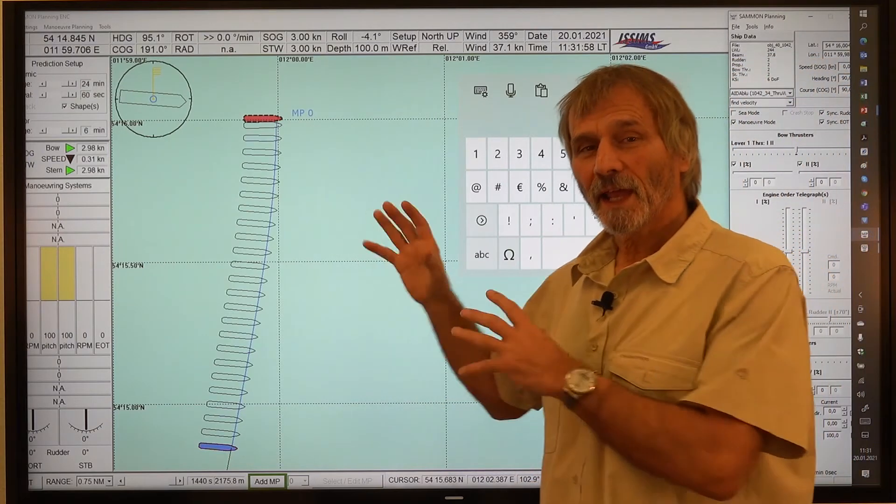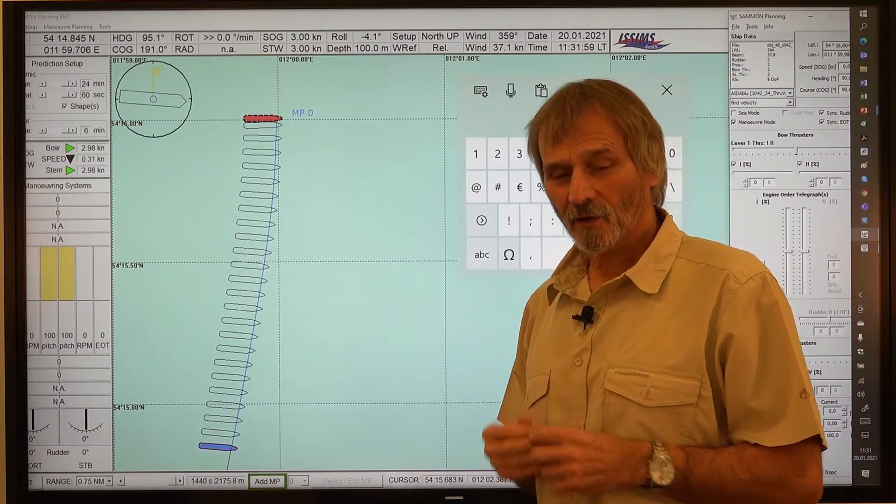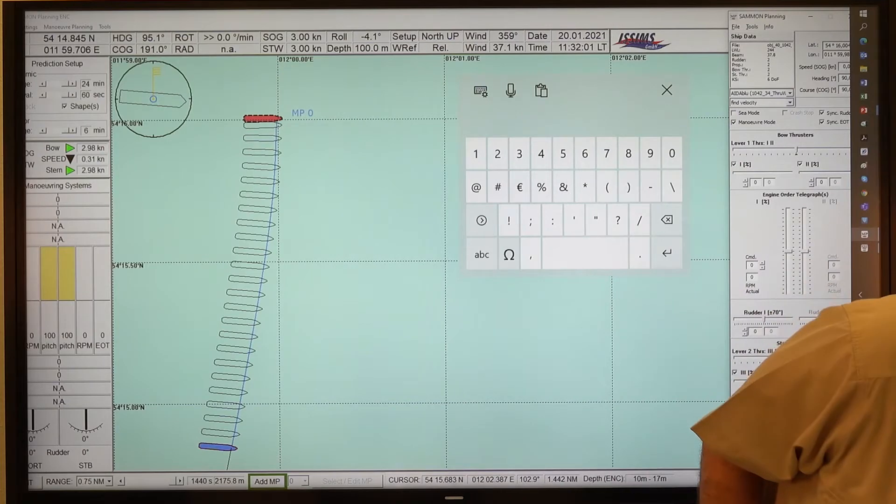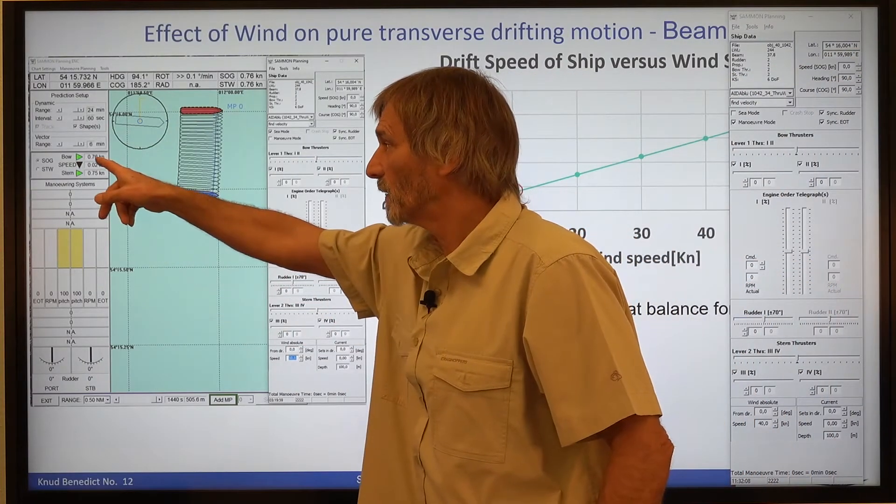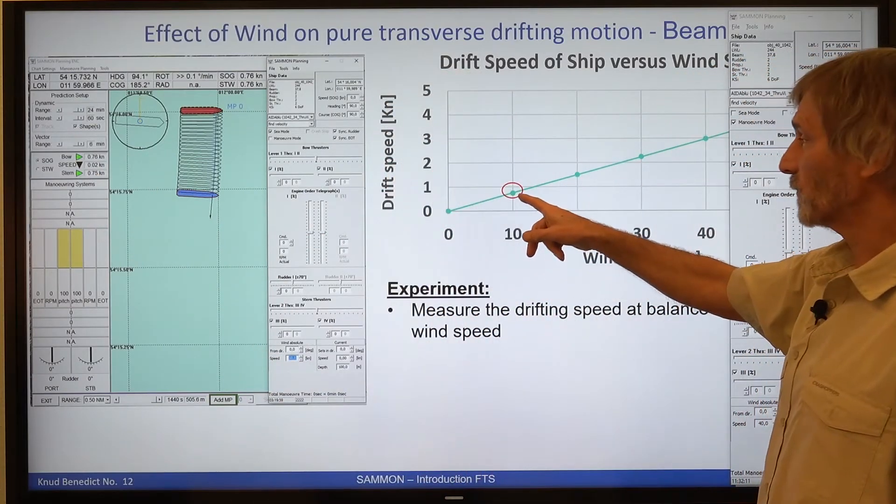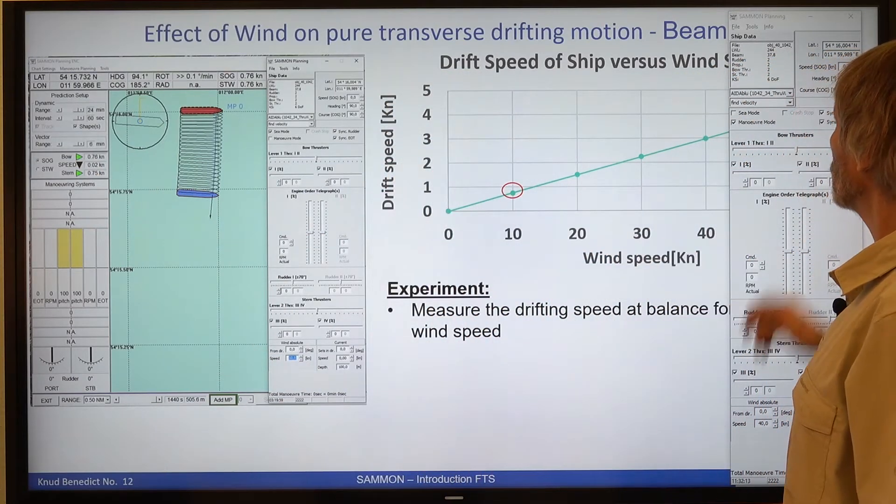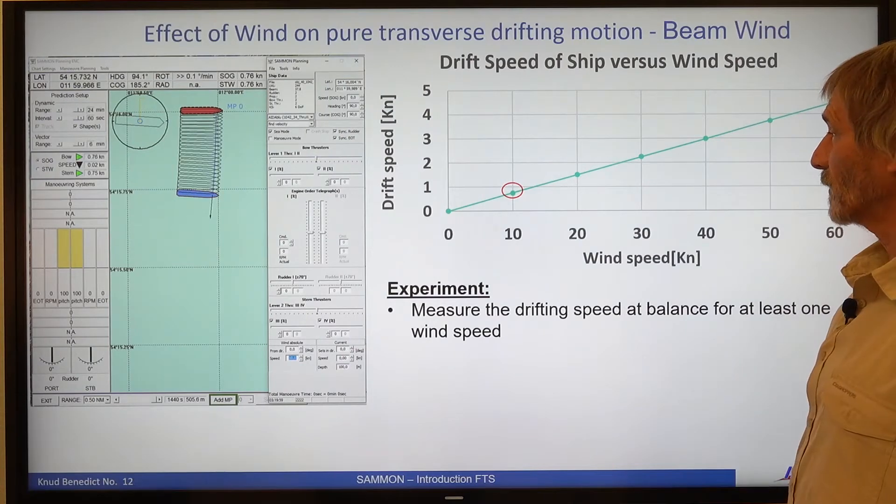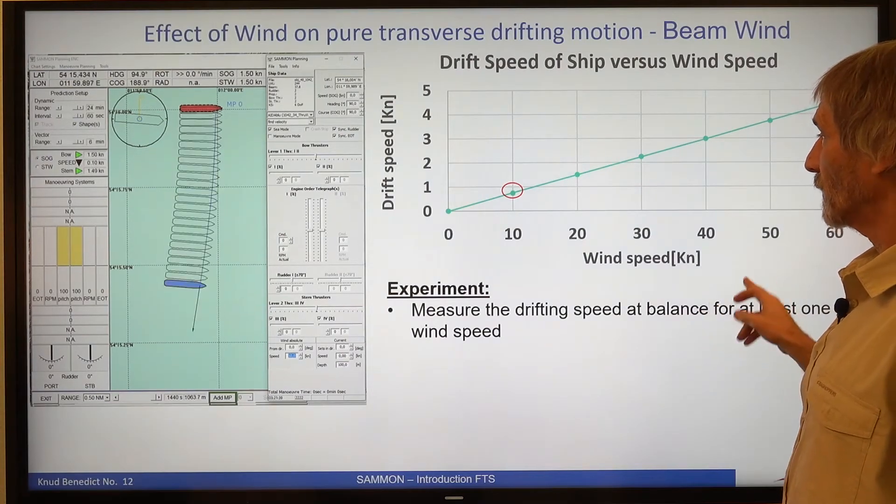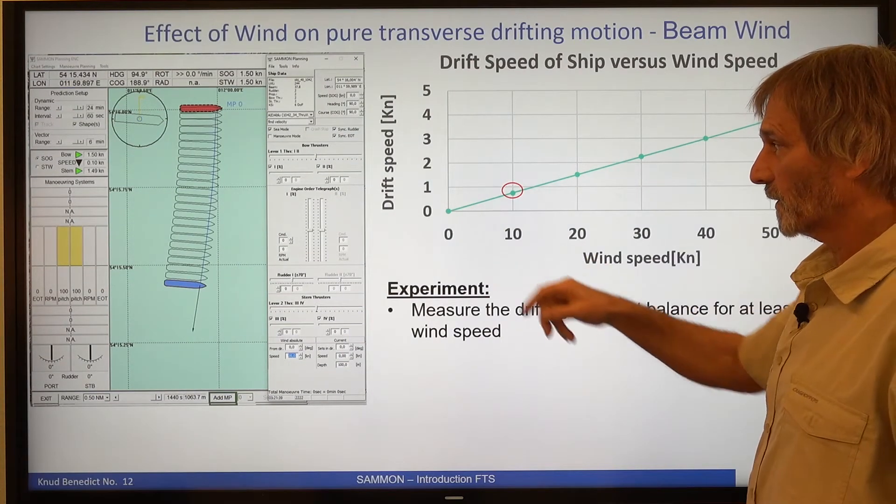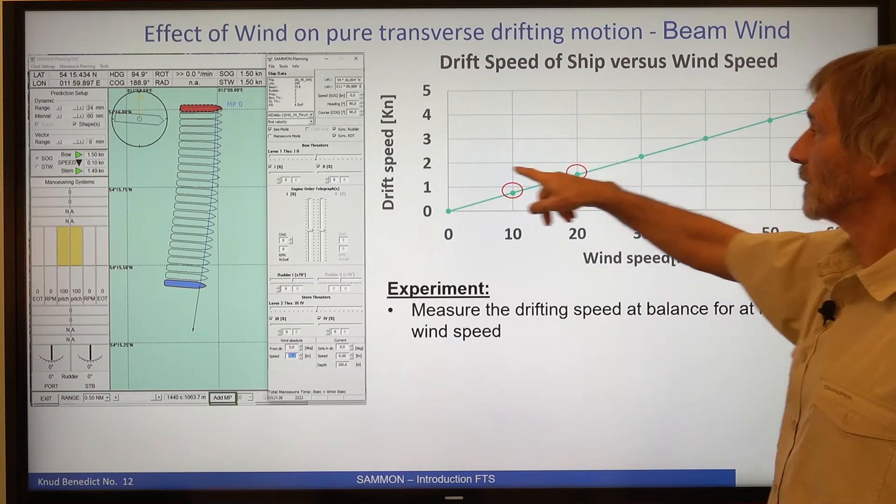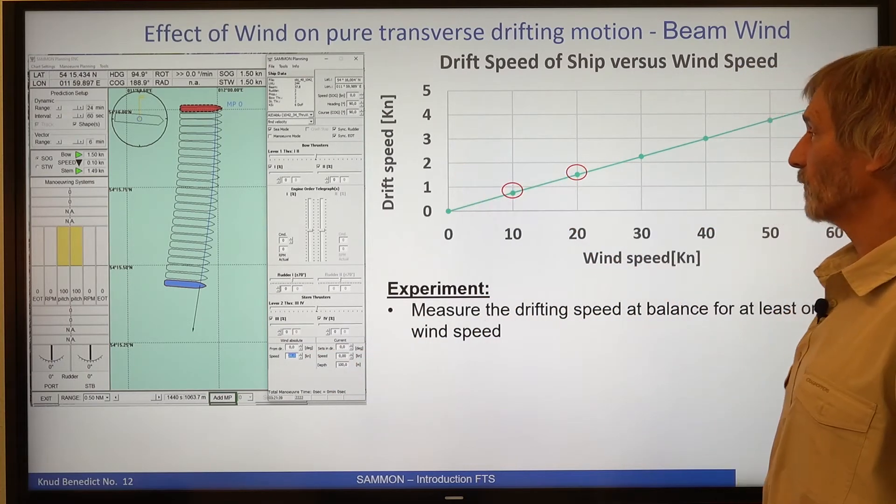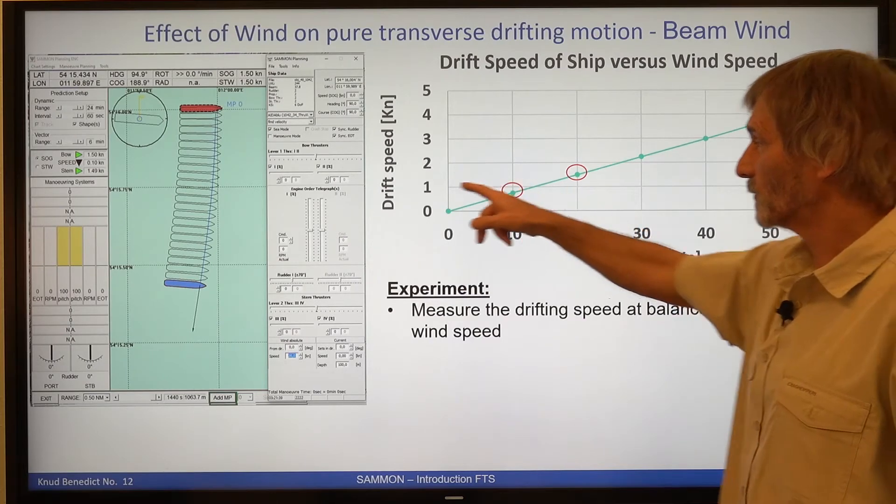And if we enter these data in our diagram, as shown here. So all the data we read here, 0.75, this is the first entry which we have here. And the second part is for 20 knots of wind. We had the 1.5 knots for the drift speed.